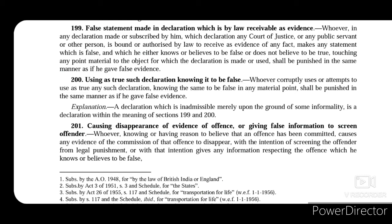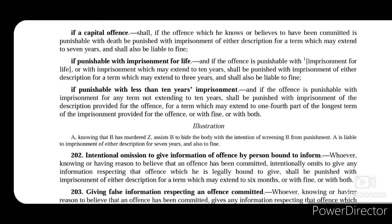Sections 201 to 204 talk about causing disappearance of evidence. Section 201 deals with causing disappearance of evidence of an offence or giving false information to screen an offender. Whoever causes evidence of an offence to disappear, or gives false information so that the offender does not get caught, shall be punished with imprisonment for a term which may extend to 7 years and shall also be liable to fine, if the offence he knows or believes to have been committed is punishable with death.